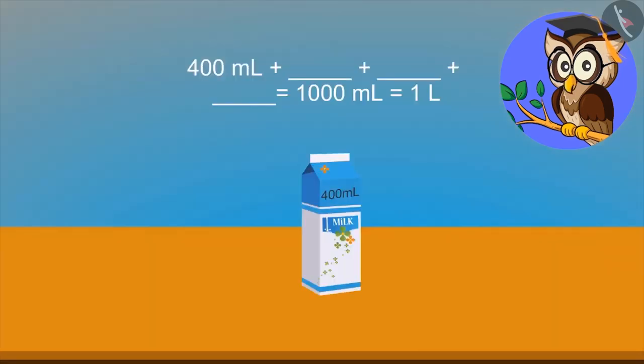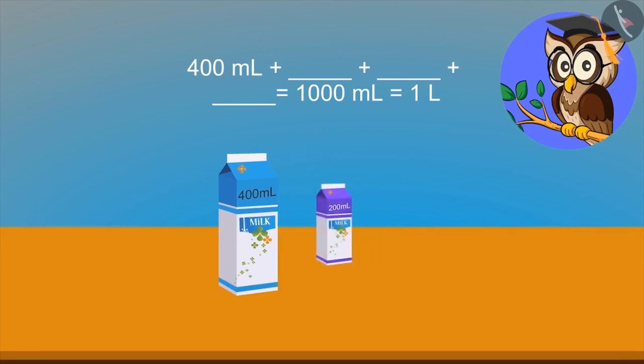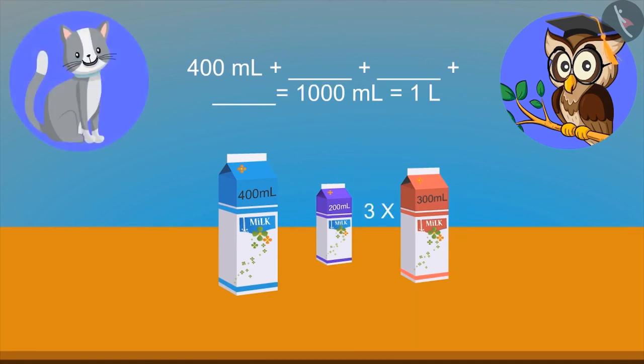See this. We have 400 ml of milk. We need 1,000 ml or 1 liter milk. Now look. These are the packets of 200 ml, 300 ml and 400 ml. Which three identical packets will combine to make 1,000 ml? Is the answer 300 ml?